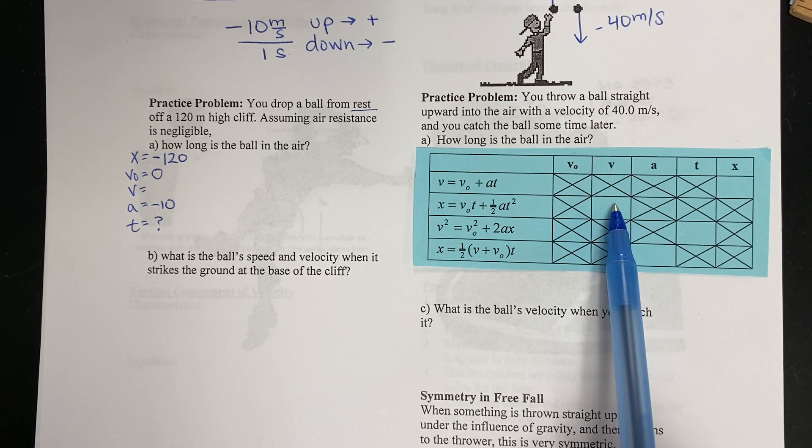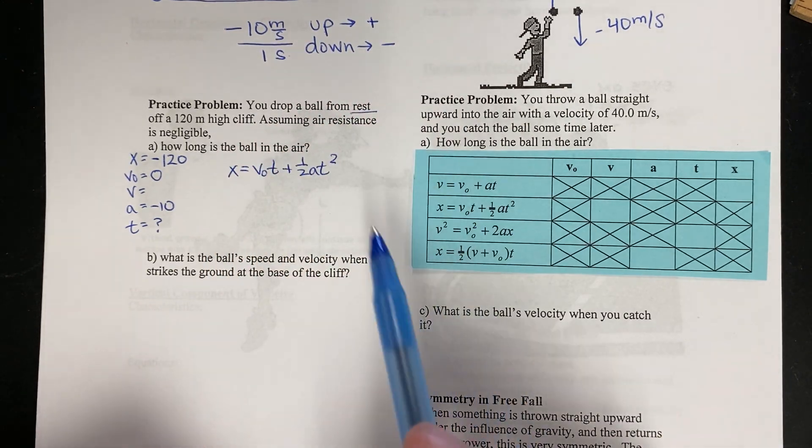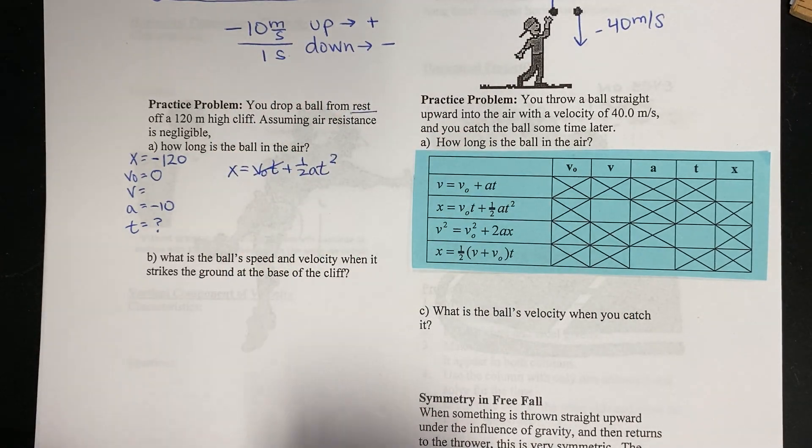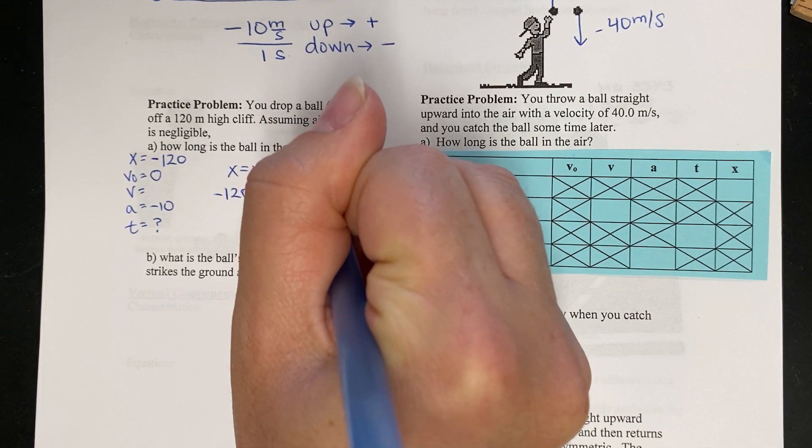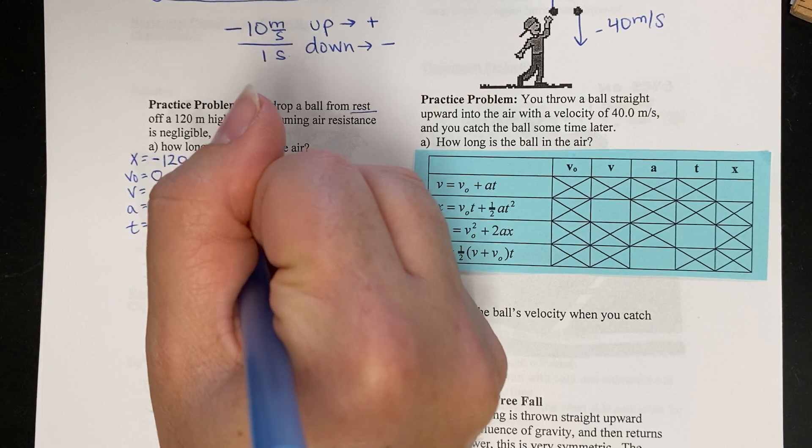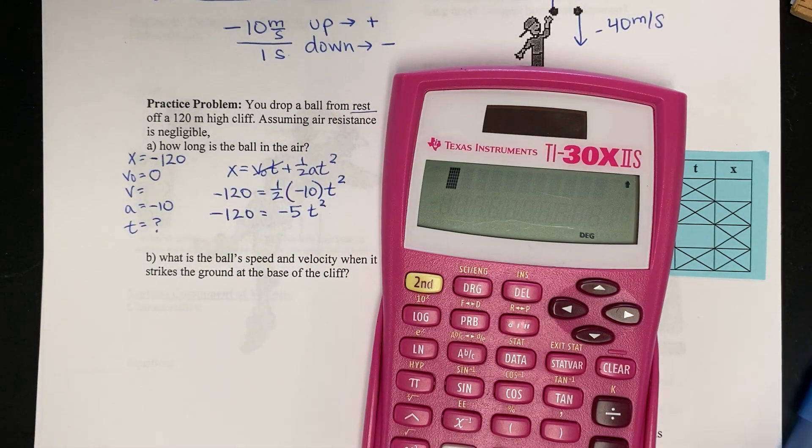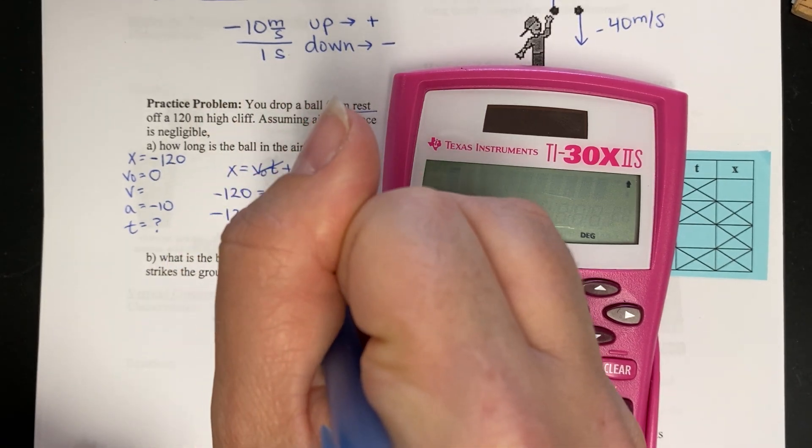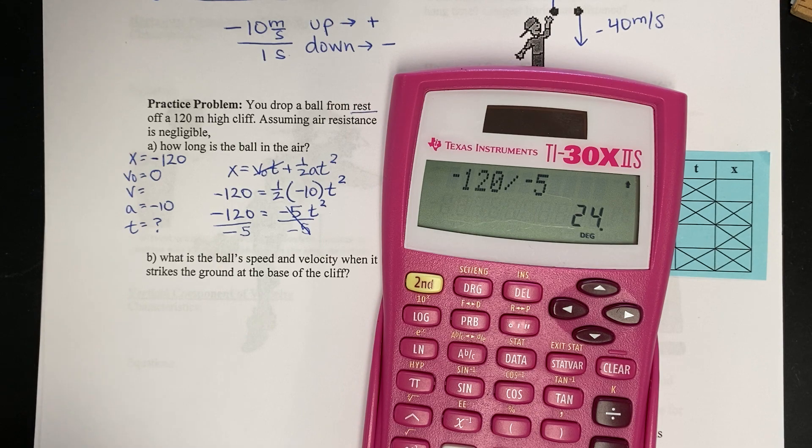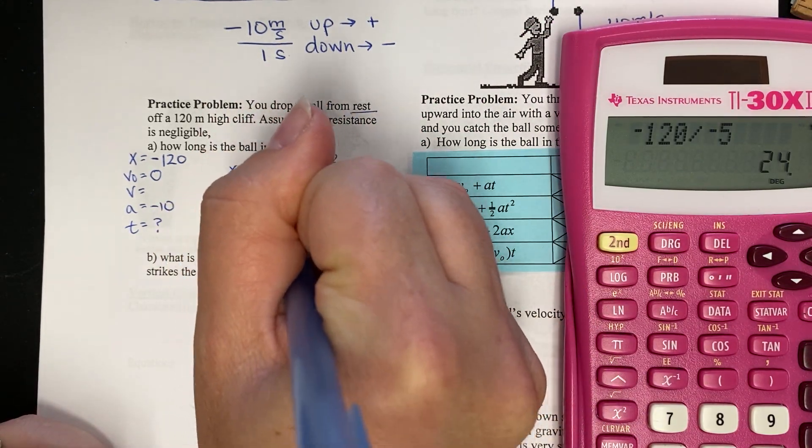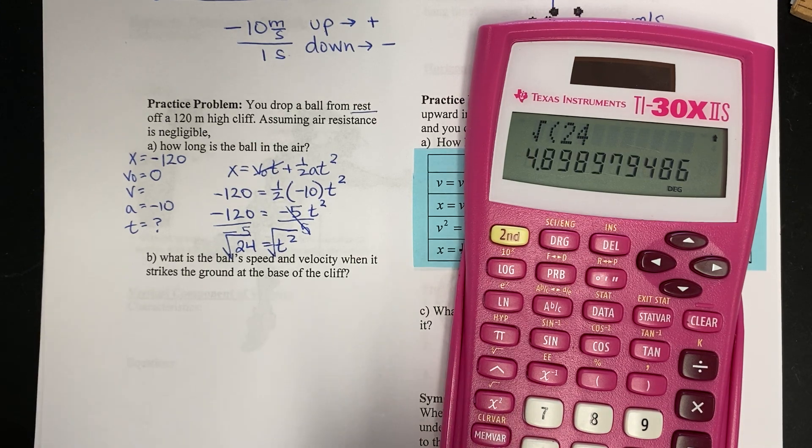So we're looking for the equation that has no V velocity. So I'm going to use the equation X equals V naught T plus one half A T squared. My initial velocity is zero. So I'm going to cancel out that whole term. Or I'm going to get negative 120 equals one half of negative 10 times T squared. Or I would do 120 equals negative 5 T squared. So grabbing my calculator here. I'm going to divide both sides by negative 5. Negative 120 divided by negative 5. And I get 24. So 24 equals T squared. I square both sides. And I get 4.9 seconds.